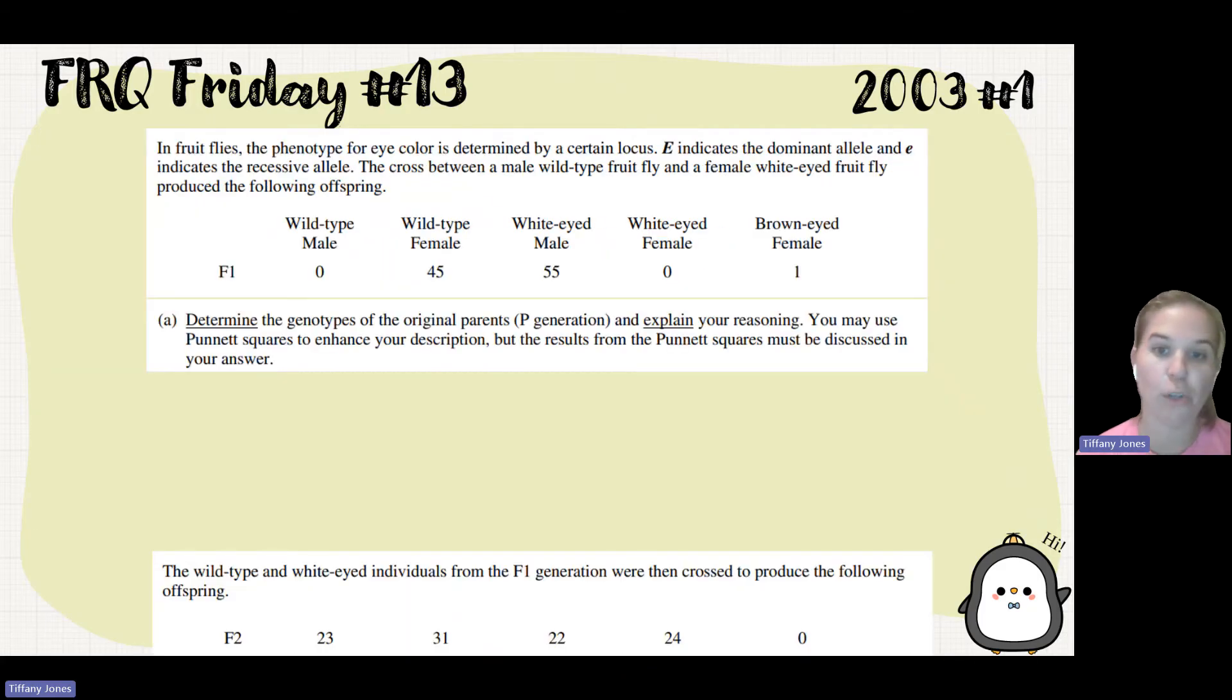So they want us to determine the genotype's original parents and explain my reasoning. I see that all the offspring are either a wild type female or a white eyed male. And so that screams to me that it's sex linked because the male only has one X chromosome. That one X chromosome will either have the dominant allele or the recessive allele. If it has the dominant allele, it shows the dominant phenotype. If it has the recessive allele, it shows the recessive phenotype.